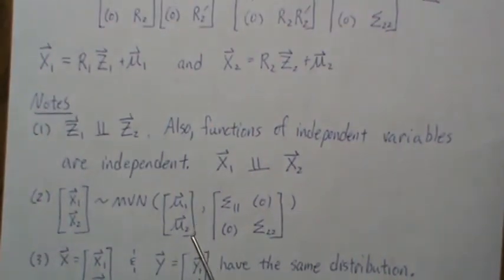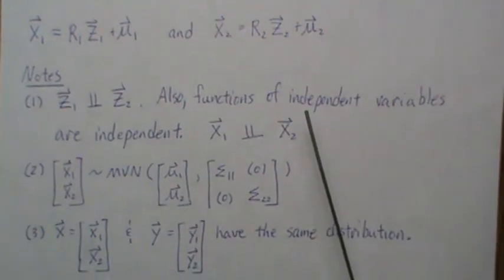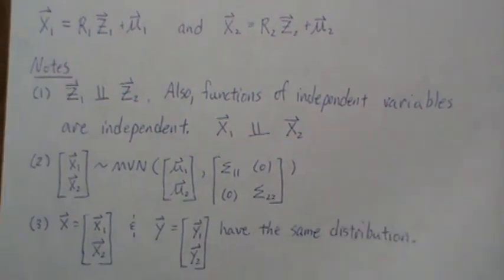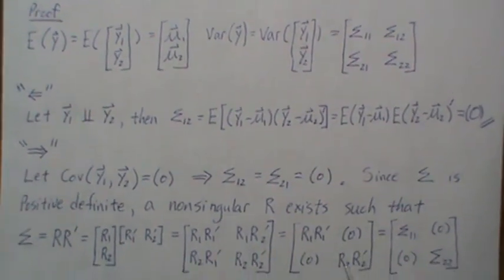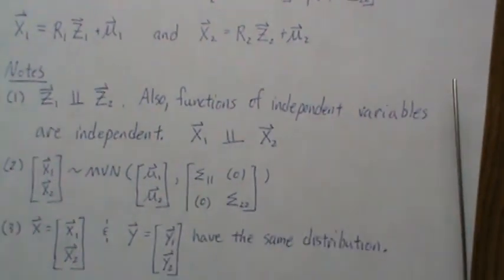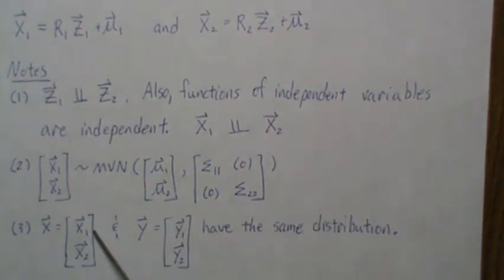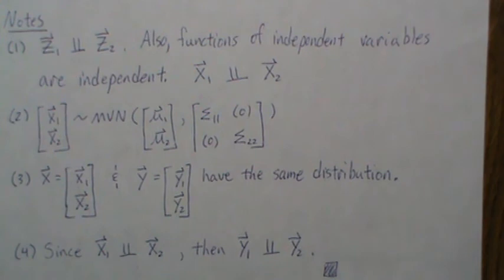The distribution of x is multivariate normal with mean vector (mu1, mu2) and variance-covariance matrix sigma — exactly the same distribution as y. Since x and y have the same distribution and x1 is independent of x2, it follows that y1 and y2 are independent. We assumed the covariance was zero and showed that implies y1 and y2 are independent — completing the proof.